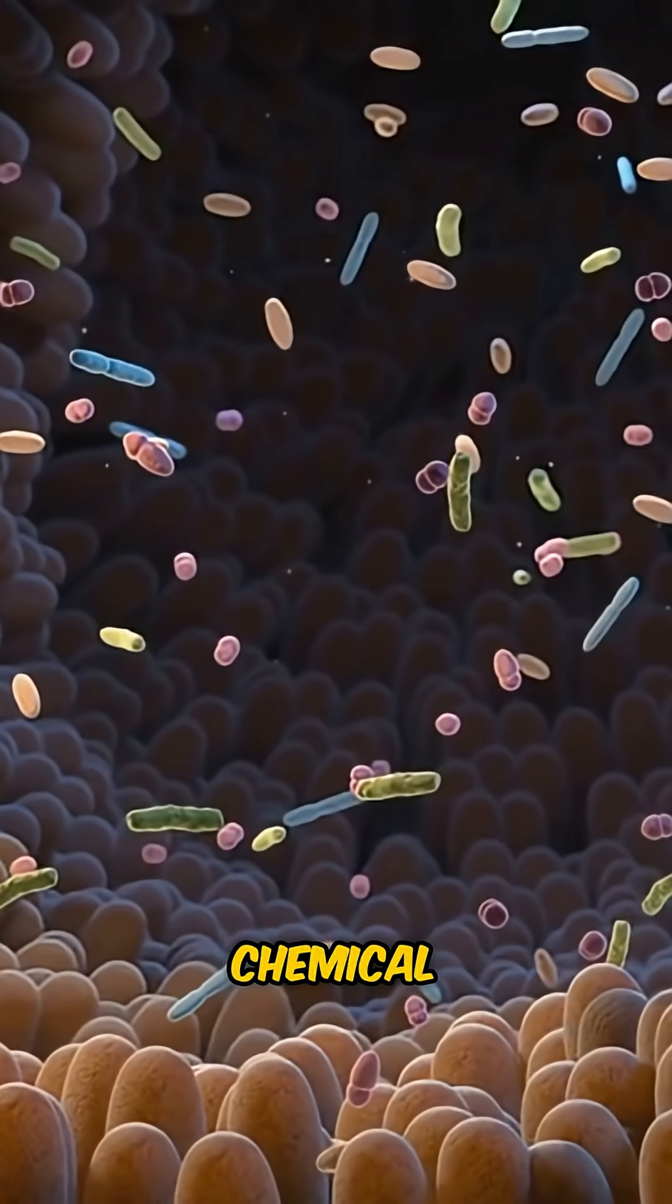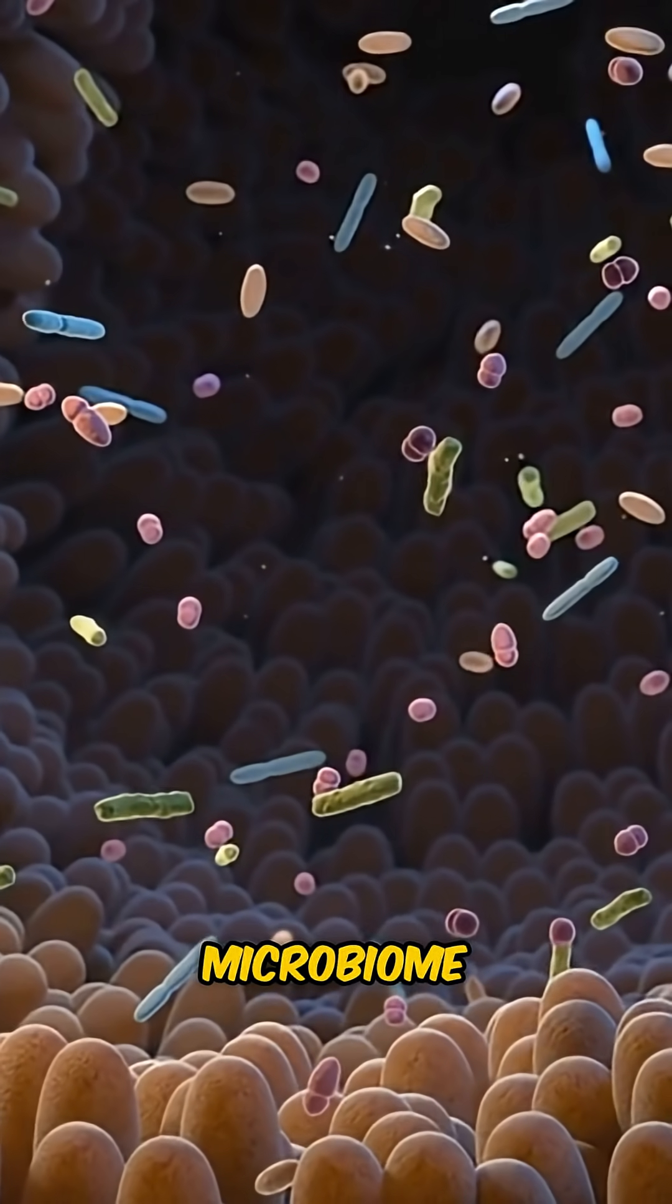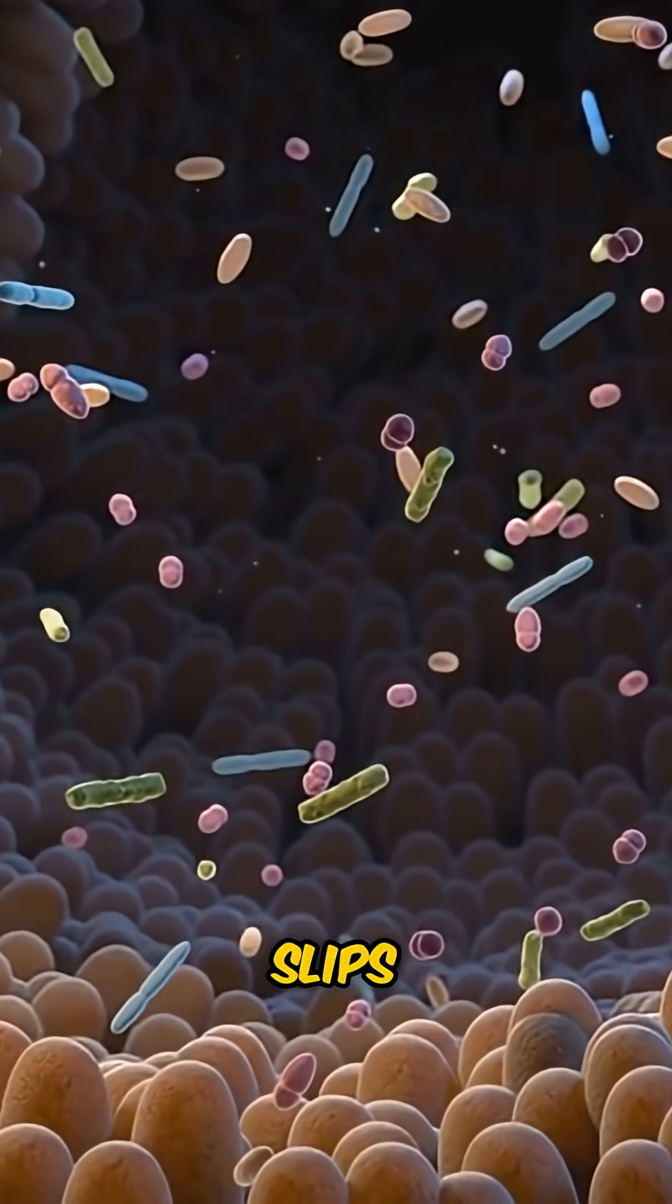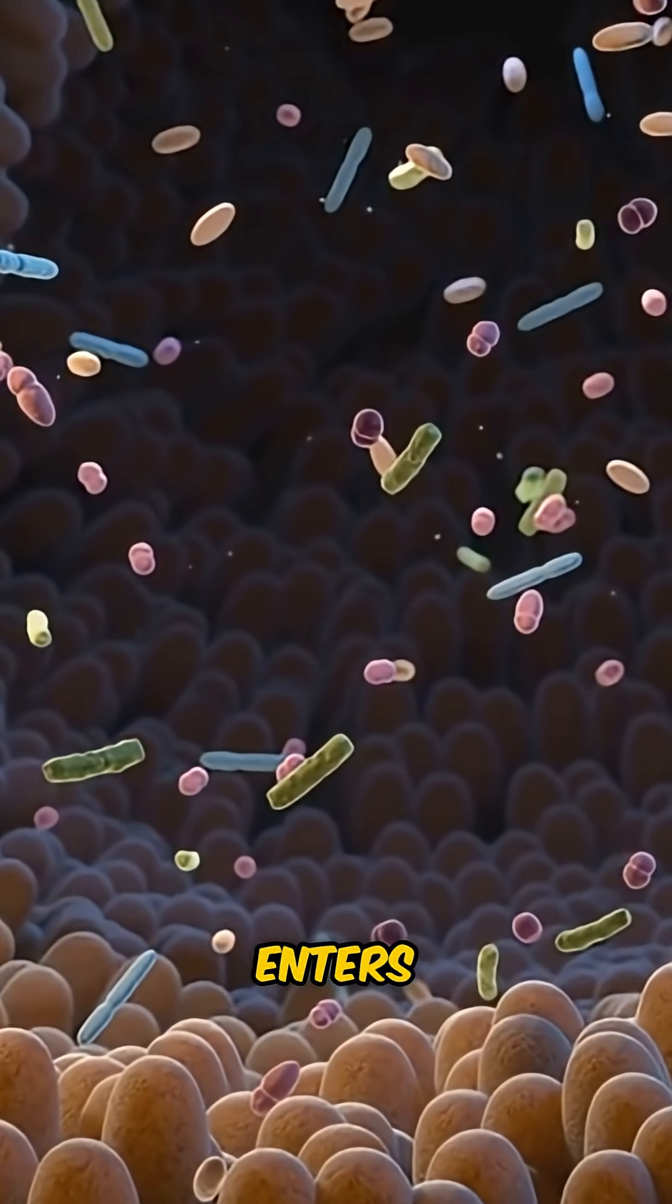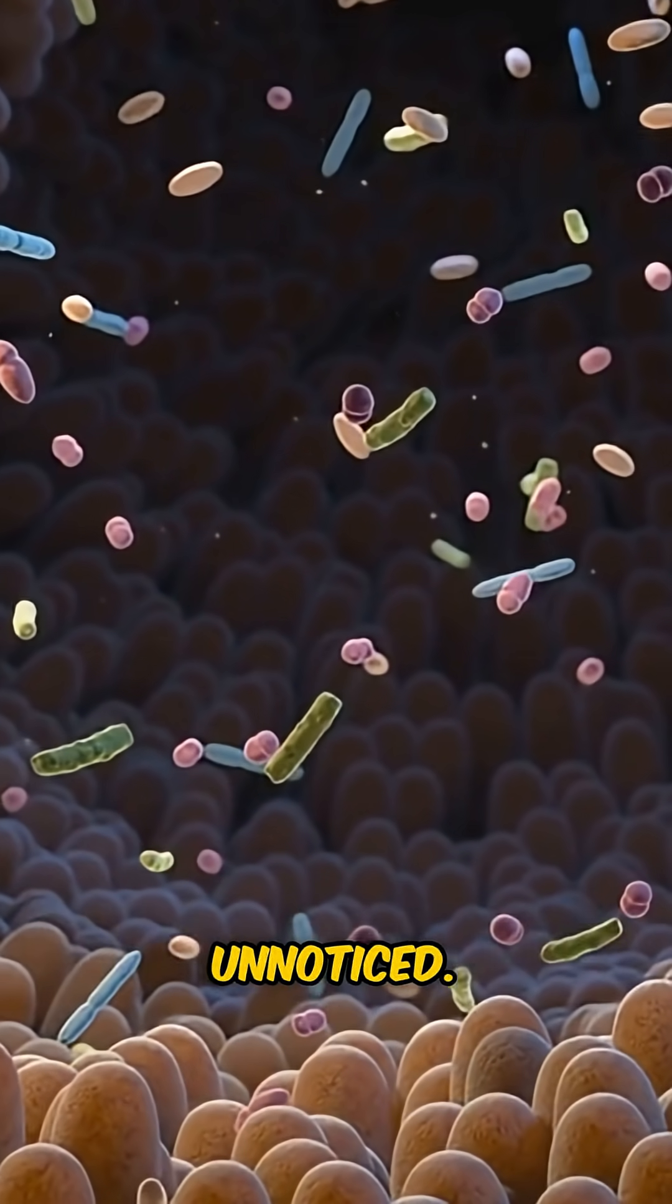IMP is a chemical made by harmful gut bacteria when your microbiome is out of balance. It slips through a weakened gut barrier and enters your bloodstream, completely unnoticed.